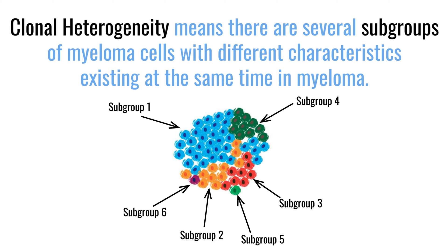If one person is diagnosed with myeloma and we look closely at the cancer cells, we're going to see that there are different groups of cells that are more similar to each other than the whole entire group — almost like a family. When you're looking at your brother or sister and comparing your immediate family with your cousins and more distant relatives, there are going to be more differences between those different families. The same thing happens with myeloma.